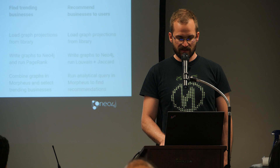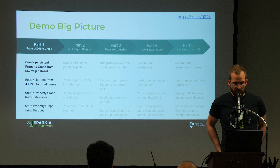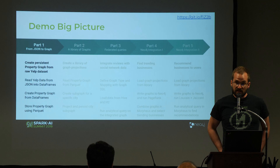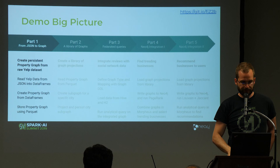The audience votes for code. There is a big demo separated into five parts: first, using the Yelp dataset to create a property graph and persist it; then building a library of graphs; then querying and integrating Neo4j.